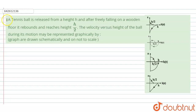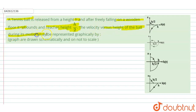Hello, welcome to Doubtnut. In this question, a tennis ball is released from height h and after free falling on a wooden floor, it rebounds and reaches height h/2. We need to determine how the velocity versus height graph of the ball during its motion may be represented graphically.